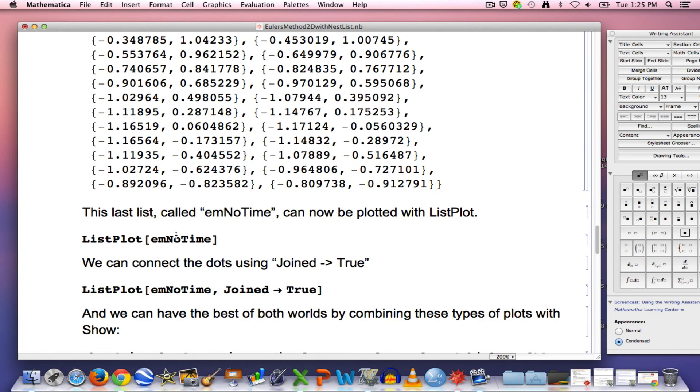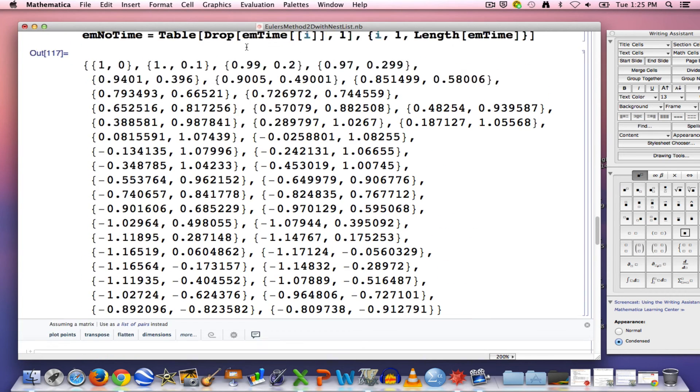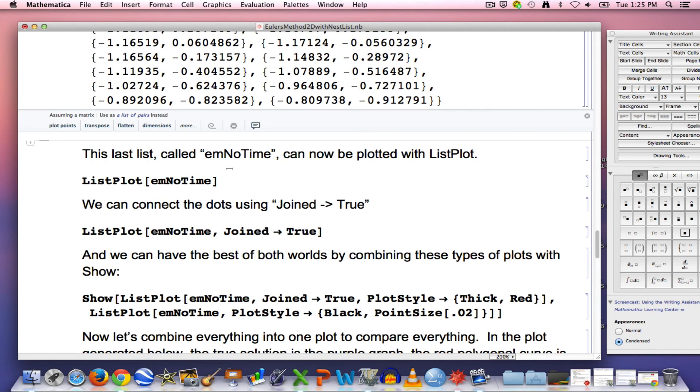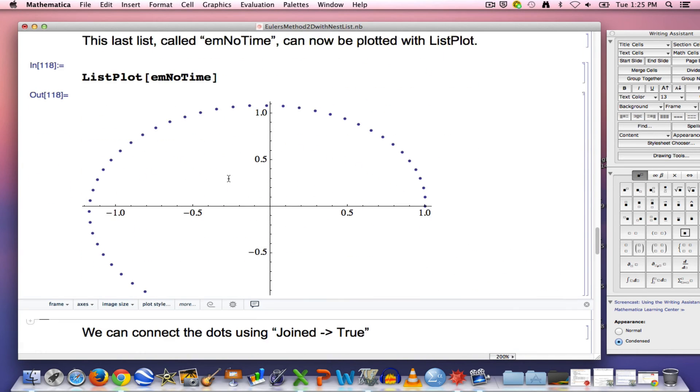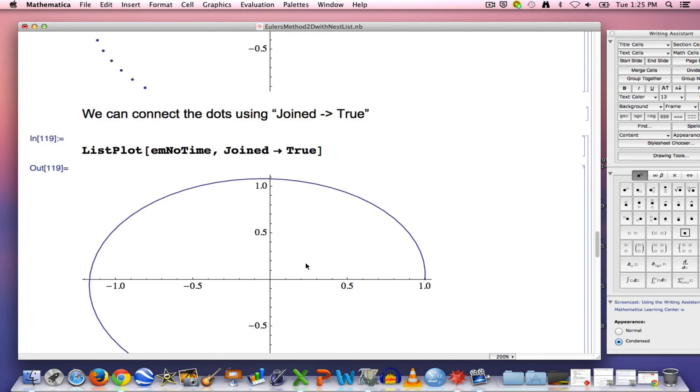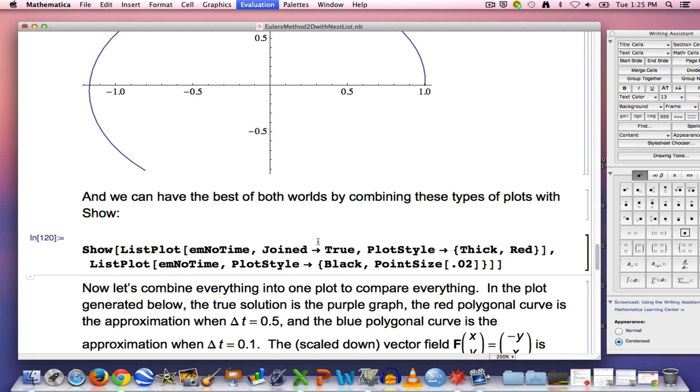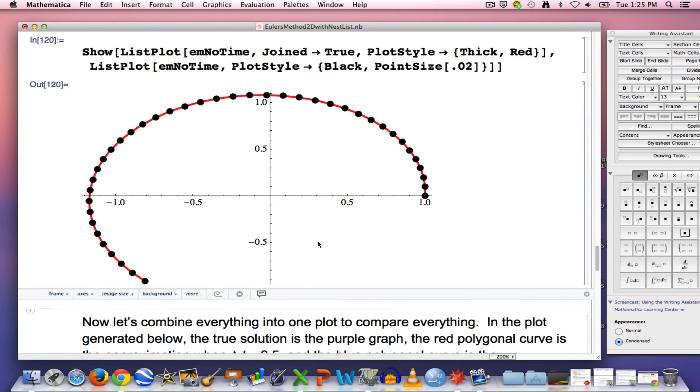I can ultimately plot that with list plot. Once it's entered, I don't remember if I entered it. There we go. I can plot that with list plot to get my approximation to the true solution. I can join those dots to make straight line segments, though it looks like a curve. I can combine everything, dots and line segments to get my approximation.